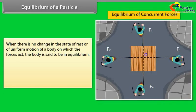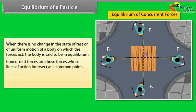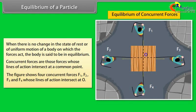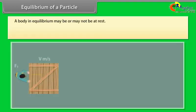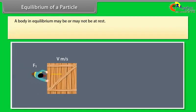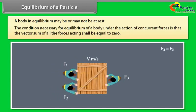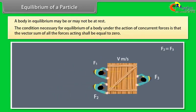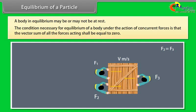When there is no change in the state of rest or of uniform motion of a body on which forces act, the body is said to be in equilibrium. Concurrent forces are those whose lines of action intersect at a common point. A body in equilibrium may or may not be at rest. The condition for equilibrium under concurrent forces is that the vector sum of all the forces acting shall be equal to zero.